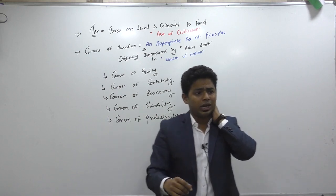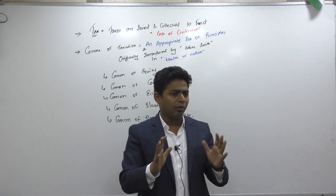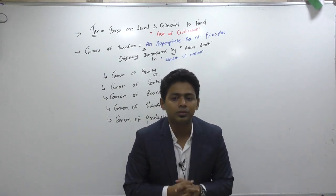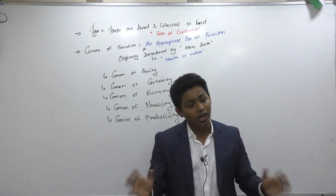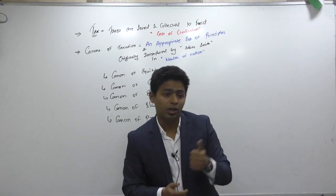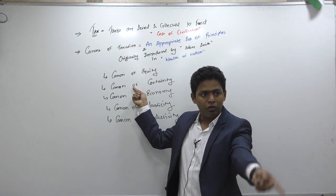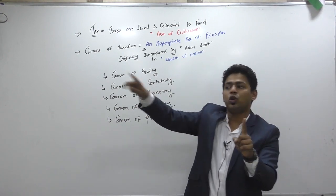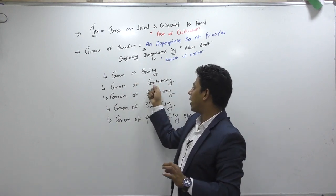Canon of certainty means tax rates should not keep changing every month. People should know with certainty how much tax they will pay next year. The government announces the budget — up to 2.5 lakh nil, 2.5 lakh to 5 lakh 5% — everybody knows this. If the government suddenly announces 50% tax rate, that will hurt everyone. So government announces the budget in February, debates it, and approves it before April 1st so everybody knows in advance from April to March how much tax they are expected to pay.